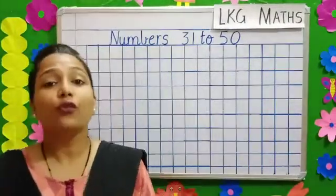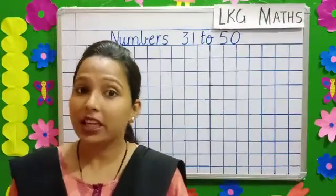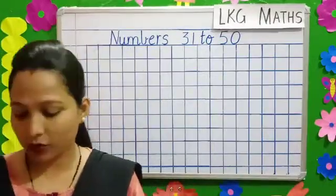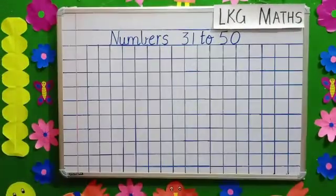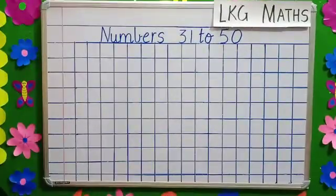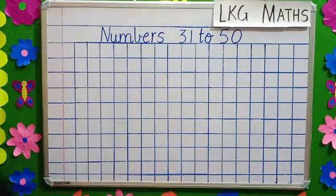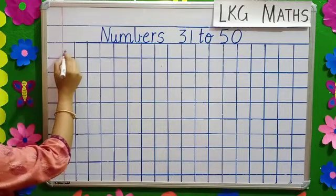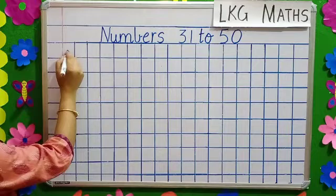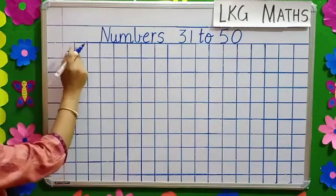So children, when you write these numbers in your copy, you write it in the way I show you just now. So children, this is the red margin. You have it in your copy too. When you start writing, put a dot and leave this box beside the margin. Then start writing.